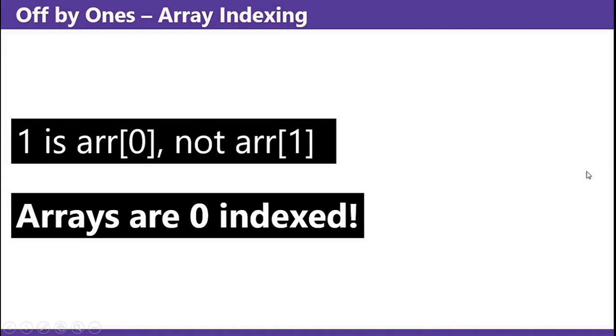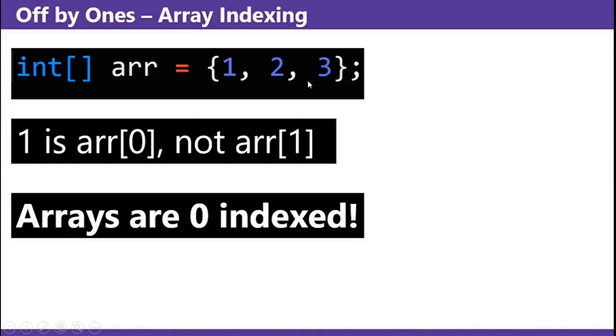Off by ones - Array indexing. int array equals 1, 2, 3. Number 1 is array sub 0, not array 1. Arrays are 0 indexed.